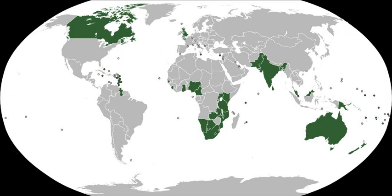Due to their shared constitutional histories, several countries in the Commonwealth have similar legal and political systems. The Commonwealth requires its members to be functioning democracies that respect human rights and the rule of law. Most Commonwealth countries have the bicameral Westminster system of parliamentary democracy. The Commonwealth Parliamentary Association facilitates cooperation between legislatures across the Commonwealth, and the Commonwealth Local Government Forum promotes good governance amongst local government officials. Most Commonwealth members use common law, modelled on English law. The Judicial Committee of the Privy Council is the Supreme Court of 14 Commonwealth members.